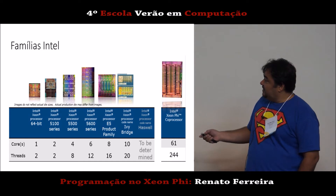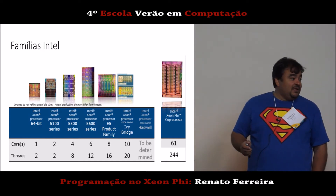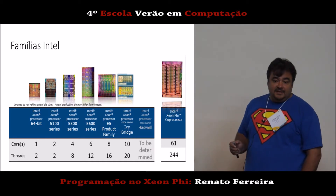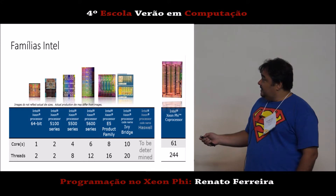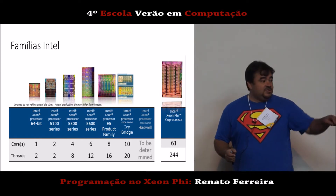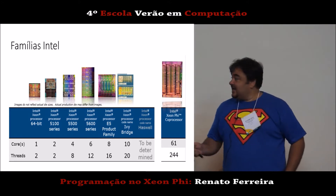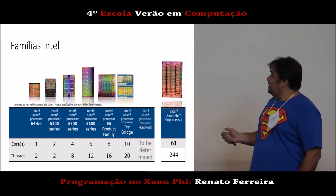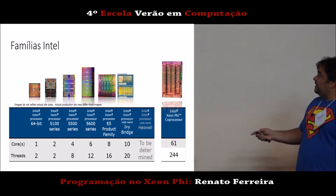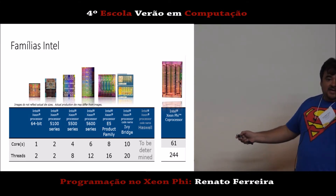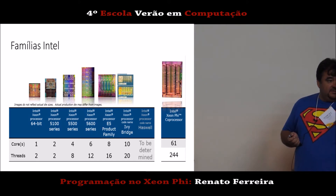Depois passou para o E5, que é basicamente o que está movendo os supercomputadores atuais. O maior computador do mundo é o Tianhe-2 na China, e esse processador está dentro dele. Tem a Ivy Bridge já, e o Haswell, que é a microarquitetura dos i7s atuais. O Xeon está evoluindo nessa linha também, e em paralelo, em outra vertente, temos o coprocessador Xeon Phi, com um número muito maior de cores e de tarefas simultâneas.